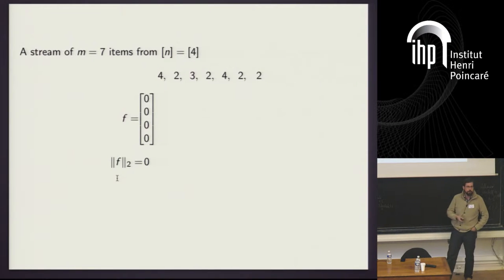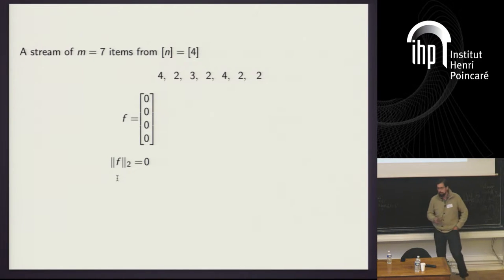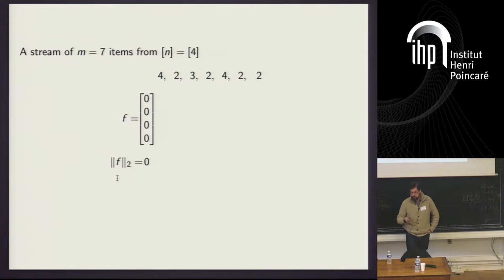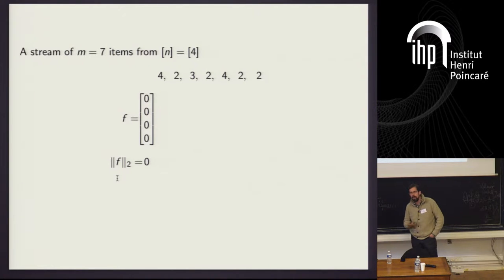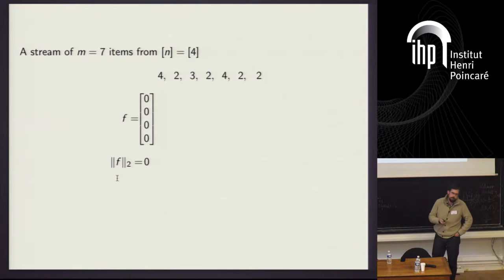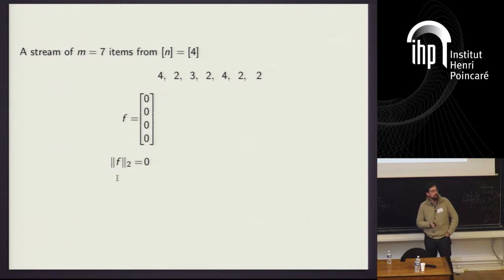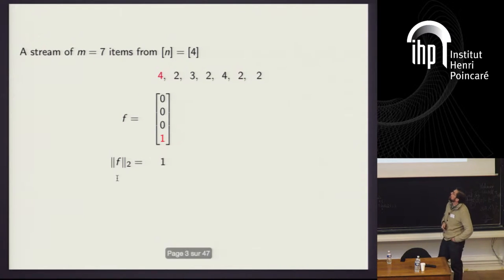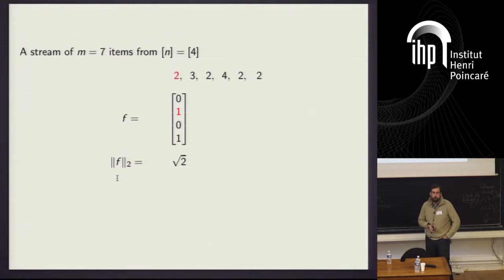Let me tell you about the data stream model. The data stream is a model of computing where the processor is given extremely restricted access to the input. For us, the input is going to be a high dimensional vector, and we're given the vector as a series of additive updates to its coordinates. We begin with the vector f, initialized to 0, and each time we read an item from the stream, we increment the corresponding coordinate of the vector.